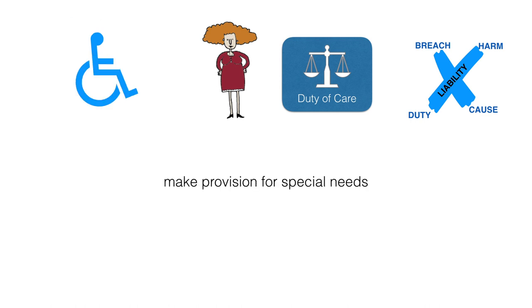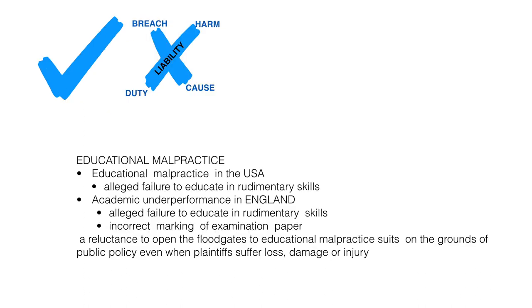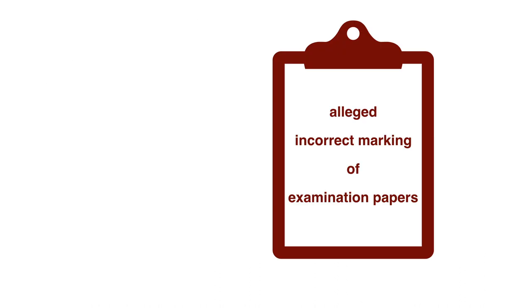There is also a possibility of legal action against the school authority for failure to make provision for special needs. Court rulings on educational malpractice include cases when the school allegedly fails to educate rudimentary skills. Also, incorrect markings of examination papers could ground an action in court where this results in the loss of a place in a higher education institution or a job.